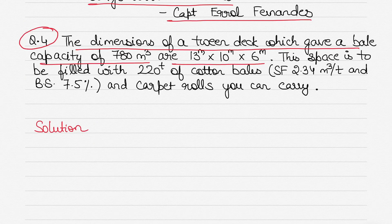The length is taken from the inside of the bulkhead stiffeners or sparse ceiling where fitted — this definition is exactly from Captain Arol Fernandez's book. Bale capacity gives you less space to load compared to grain capacity. Grain capacity is the cubic capacity where length, breadth and depth are taken right to the plating, giving you the maximum space available for loading.